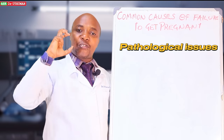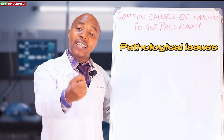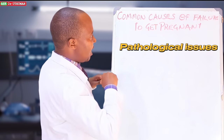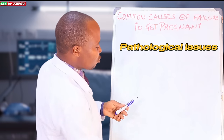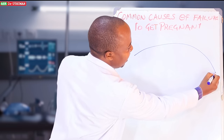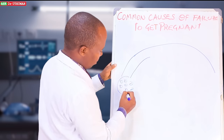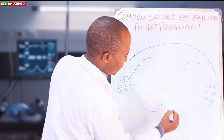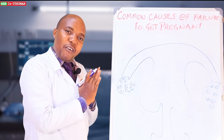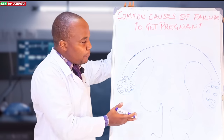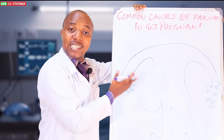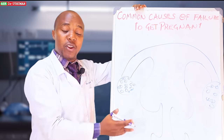Now part two, we are looking at the pathology. These are the medical reasons as to why someone may fail to conceive. I usually want to draw this structure so that I can explain things clearly. This is our female reproductive system, because when I talk about structural issues and pathological issues, I want us to look at this structure.